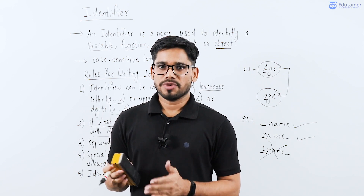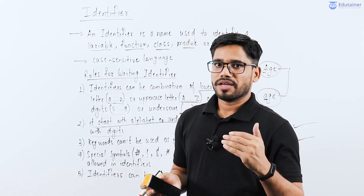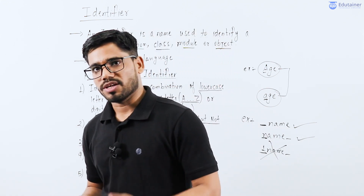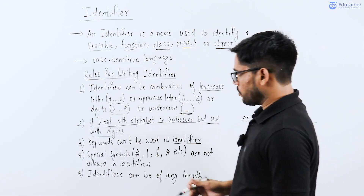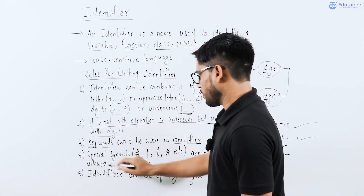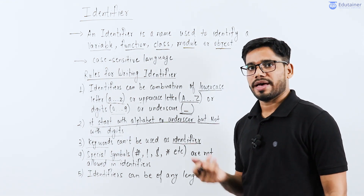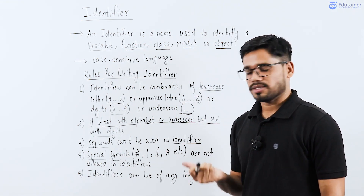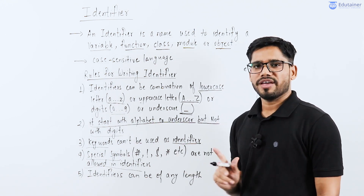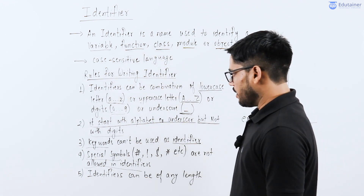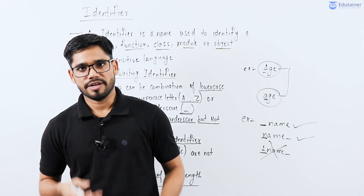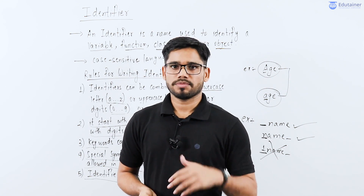In Python programming language, basically there are 35 keywords reserved. If you use Python 3.7 version, then there are a total of 35 keywords available. We will discuss keywords in a later section. You need not worry about keywords now, but you have to remember that keywords cannot be used as identifiers. Special symbols like dollar, hash, question mark, exclamation mark — they are not allowed. Just one special symbol, underscore, is allowed. And the last point is identifiers can be of any length.